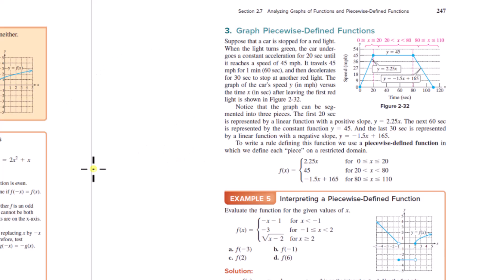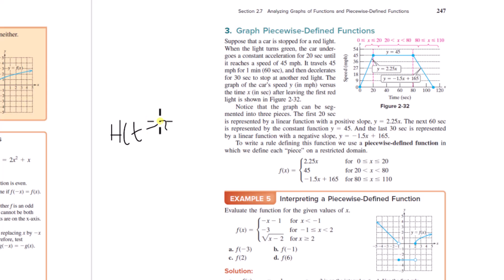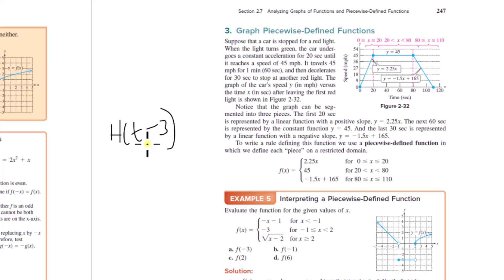The idea of the Heaviside function: H(t − 3) is defined so that it equals 1 when t is greater than or equal to 3, and equals 0 when t is less than 3. The piecewise nature is built in.